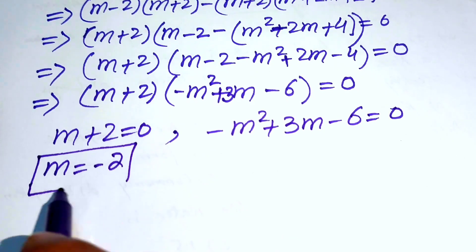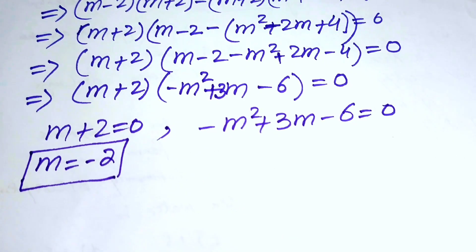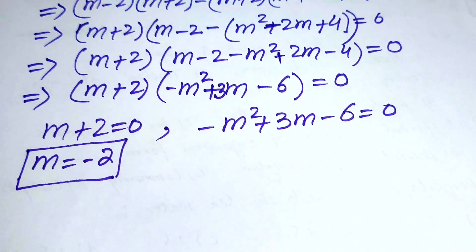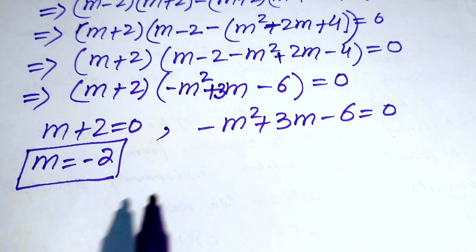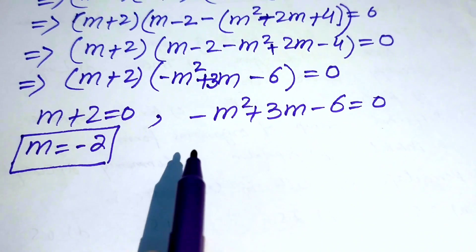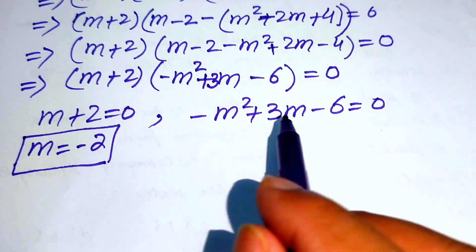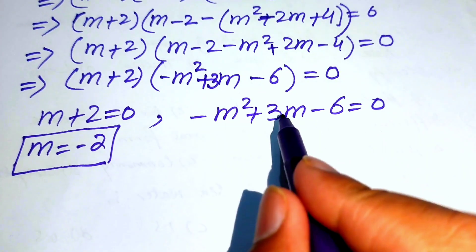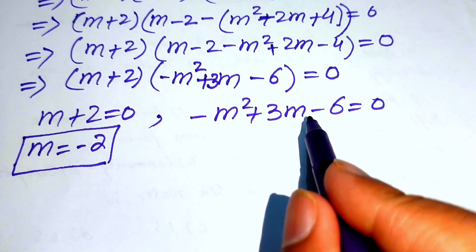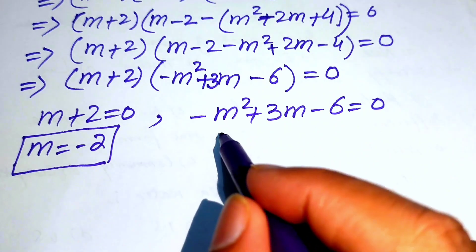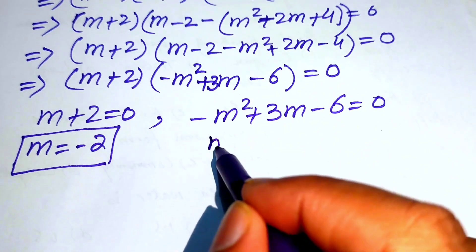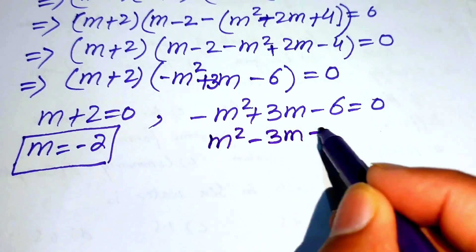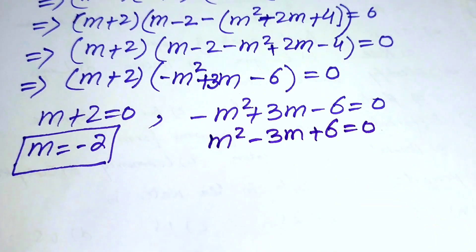To find other real solutions, we solve the quadratic from Case 2. Writing it in standard form by multiplying through by minus 1, we get m squared minus 3m plus 6 equals 0.